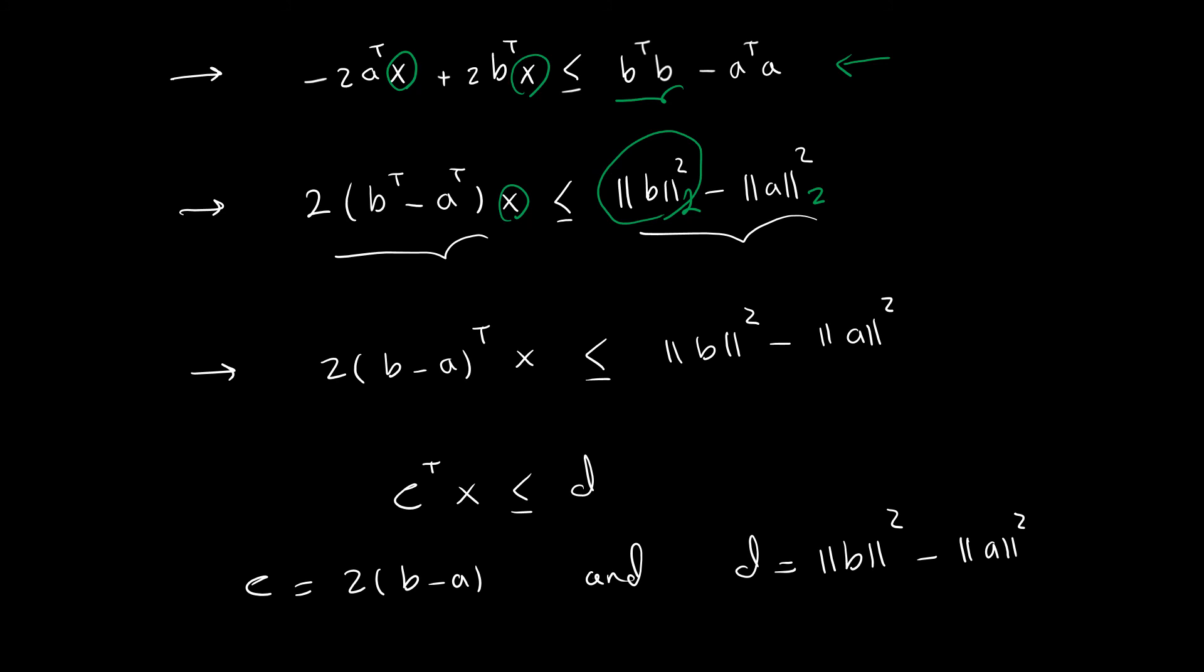On the left hand side I can factor out x and write it here. So I would be left with 2b transpose and minus 2a transpose, and we know that we can rewrite b transpose minus a as (b minus a) transpose here.